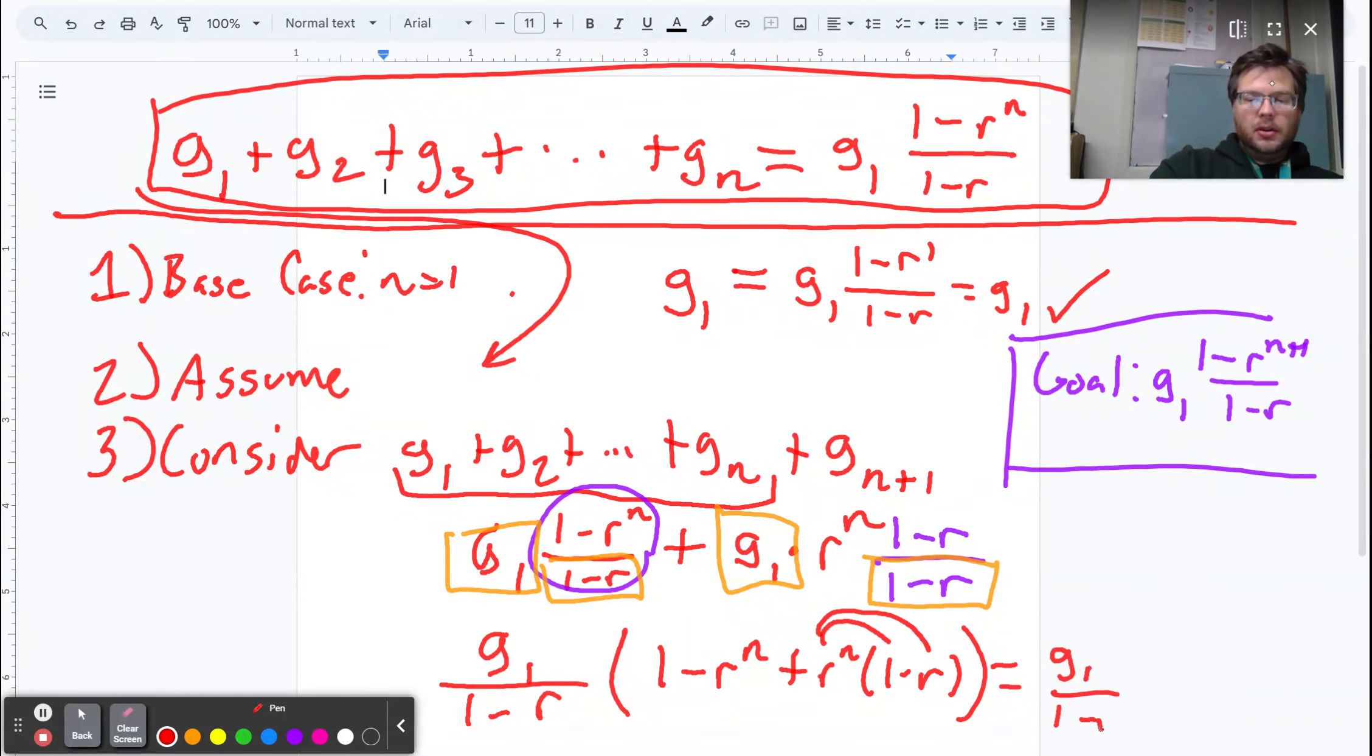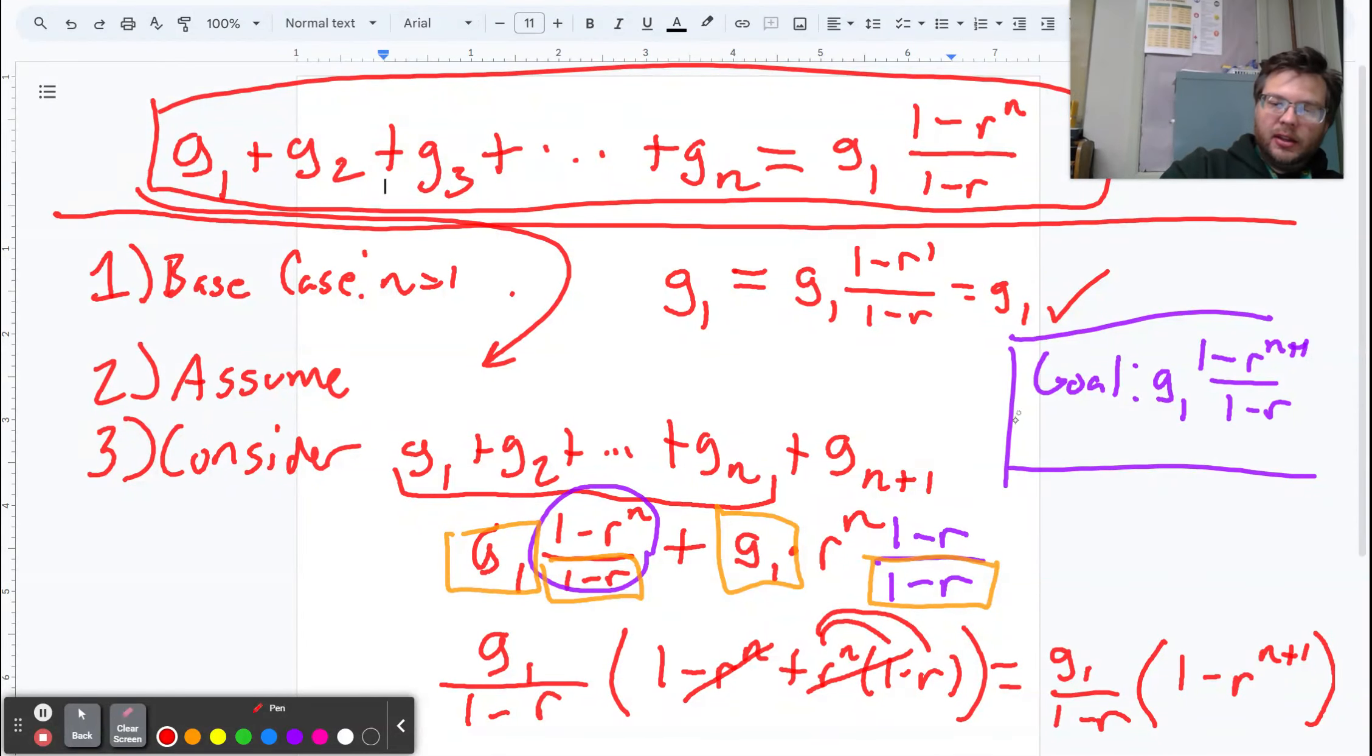g1 over 1 minus r. The negative r to the n and the positive r to the n cancel out. And I have 1 minus r to the n plus 1. And that is exactly our goal.